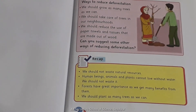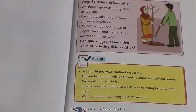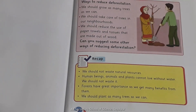Let's go through all the points we have learned in today's class. Tell me students: from where do we get oxygen, wood and fruits? Well done — we get oxygen, wood and fruits from trees. What is deforestation? Excellent — cutting down forests or a group of trees is called deforestation. Forests اور بہت زیادہ درختوں کو کاٹنا deforestation کہلاتا ہے۔